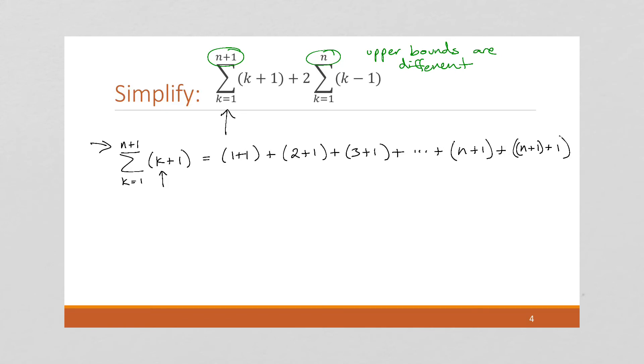So, if I wanted to pull this last term off, that means I need to summarize these terms. This is going to be k equals 1 to n of k plus 1 plus this last term, which is going to be n plus 2.